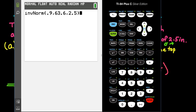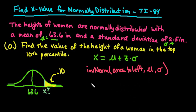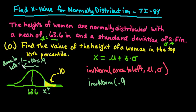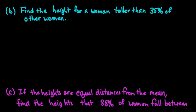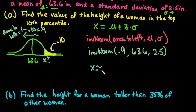The comma button is above the 7, 63.6, another comma, 2.5, close your parenthesis, and then hit enter. So this tells us that a female who is 66.8 inches. So for this what we typed in was inverse norm. Area was .9 and the .9 came from doing 1 minus .10. So that's the area to left. And then we put in our mean of 63.6 and our standard deviation of 2.5. And our output ended up being 66.8 inches.